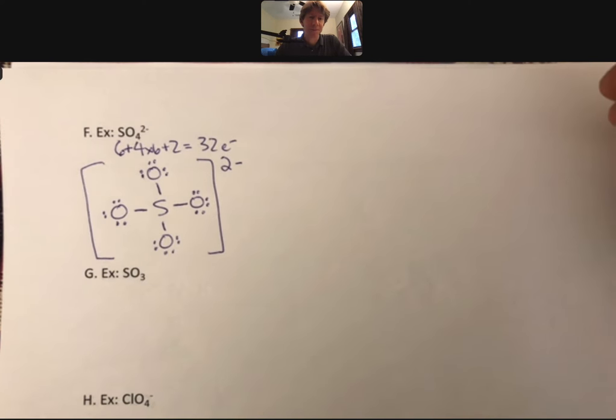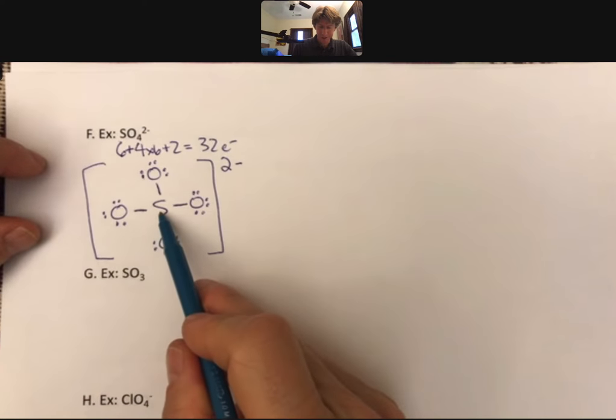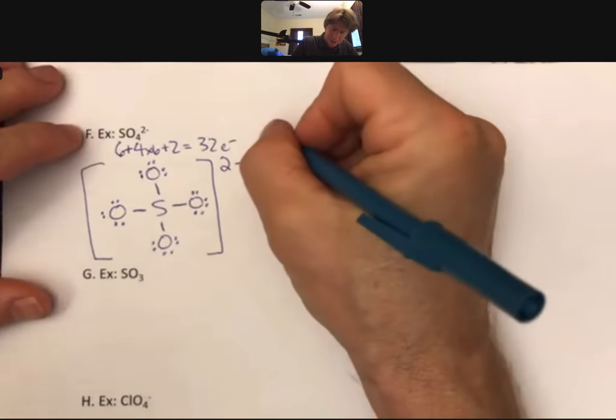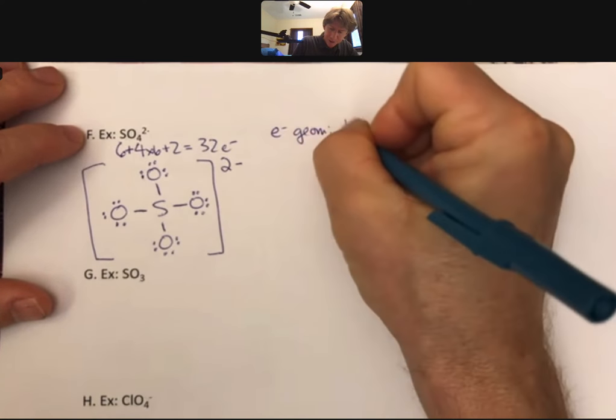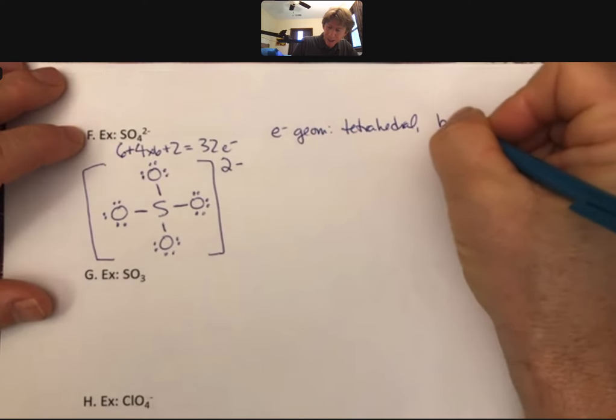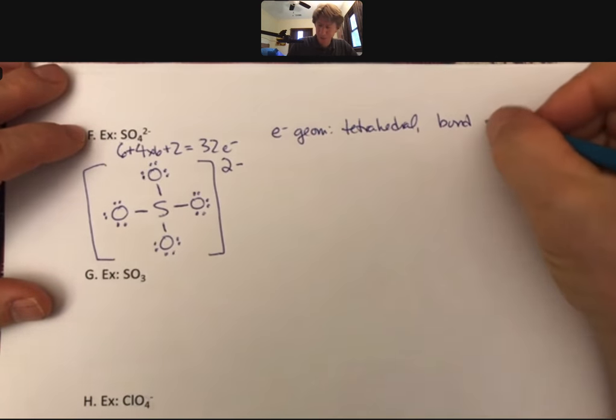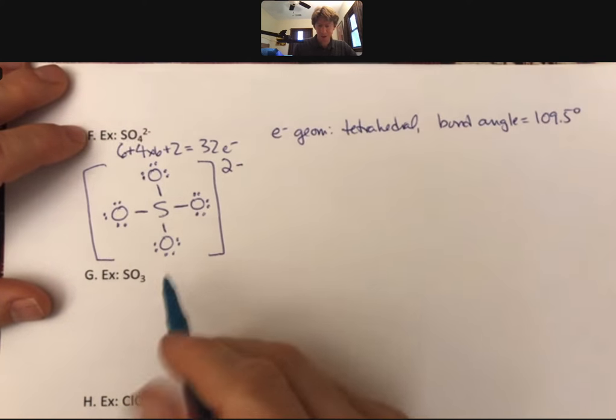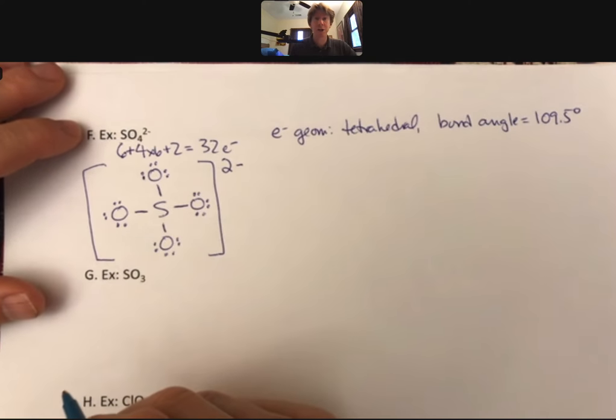Now, I can see that sulfur has four electron groups around it. This is going to be electron geometry tetrahedral, bond angle 109.5, and it's a perfect 109.5 because all of the atoms here, there's no electron pairs around the central atom.